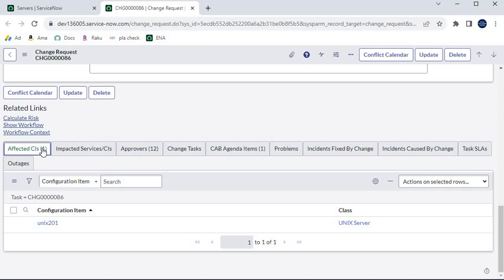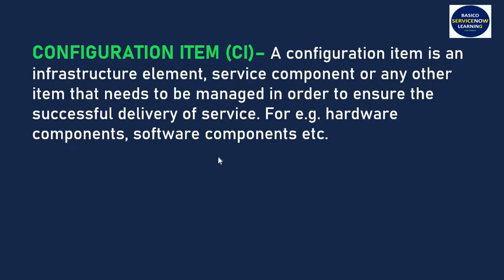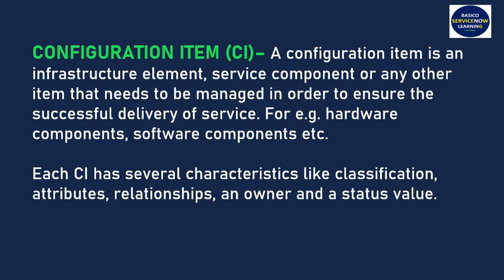Before we start, let me give you a brief understanding of CI. We refer to CI as Configuration Item. A configuration item is an infrastructure element, service component, or any other item that needs to be managed in order to ensure the successful delivery of a service — for example, hardware components, software components, etc. Each CI has several characteristics like classification, attributes, relationship, owner, and a status value.